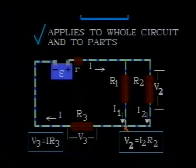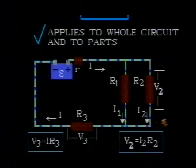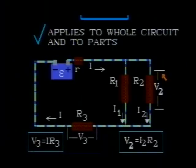We can apply Ohm's Law to parts of this circuit. For example, the voltage across resistor R2, V2, is equal to the current I2 multiplied by R2.